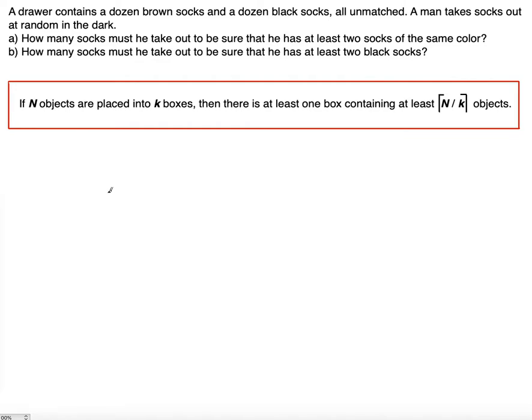For part A, we're going to use the generalized pigeonhole principle, which you see here. If N objects are placed into k boxes, then there's at least one box containing at least ceiling of N divided by k objects.